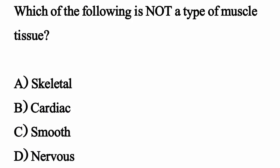Which of the following is not a type of muscle tissue? The correct option is Option D: Neurons.